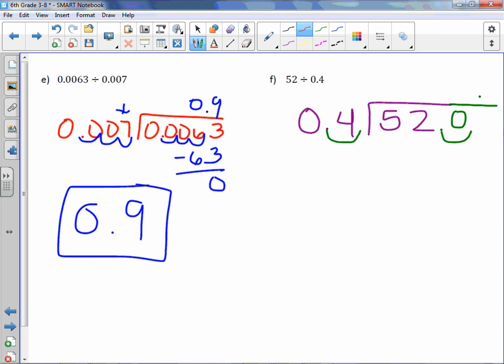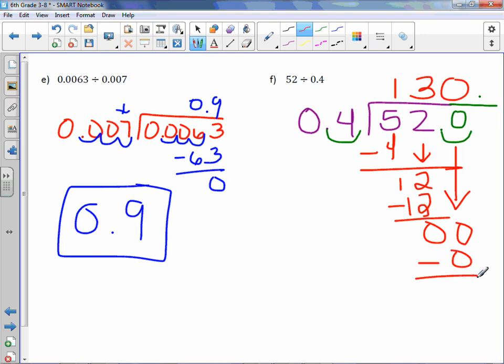So now let's do our division. 4 into 5 once, minus 4 is 1. Bring down the 2. 4 into 12, 3 times, which is exactly 12. You must bring down that 0, which is 0 times. So our quotient is 130. Looks a little weird. 52 divided by 0.4 is 130, but I assure you it is the correct answer.